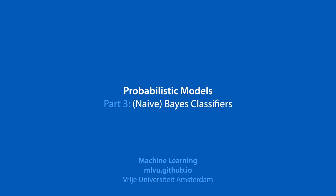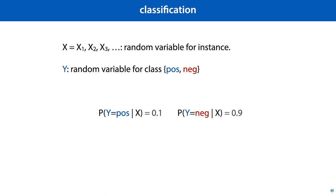In this video, we'll try to connect the things we've learned in the previous videos to the abstract task of classification that we already know. We'll focus on building probabilistic classifiers — classifiers that return not just a single class for a given instance x, or a ranking, but a probability over all classes.